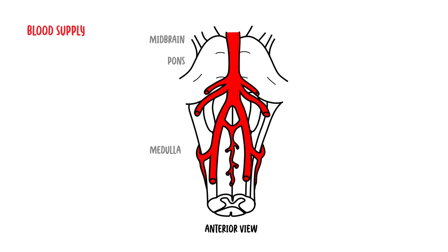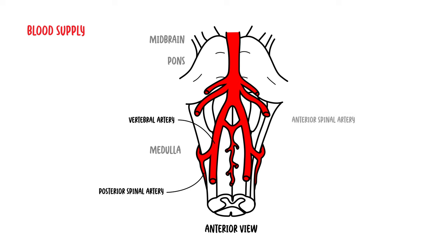The blood supply of the medulla is complex and dependent on the level being viewed, but essentially it includes the vertebral arteries, which come up from branches of the aortic arch, the posterior spinal artery, the anterior spinal artery, and the posterior inferior cerebellar artery.